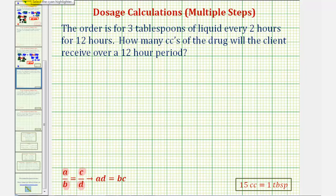Looking at the given information, notice how the first rate would be three tablespoons every two hours. So we'll have three tablespoons per two hours. Our goal is to find the rate as the number of cc's per twelve hours. We don't know the number of cc's, so we'll say x cc's to twelve hours.